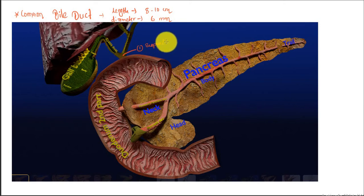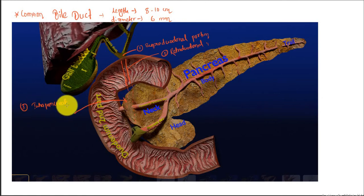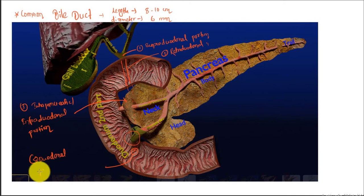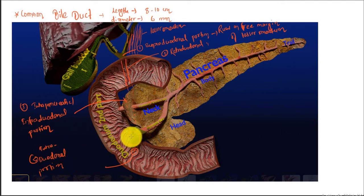There are four parts of the common bile duct: the supraduodenal part, the retroduodenal portion beside the duodenum, the intrapancreatic or infraduodenal portion through the pancreas, and the last one is the intraduodenal portion. The supraduodenal portion runs on the free margin of the lesser omentum along with the portal vein. The intraduodenal portion opens into the second part of the duodenum through the major duodenal papilla.